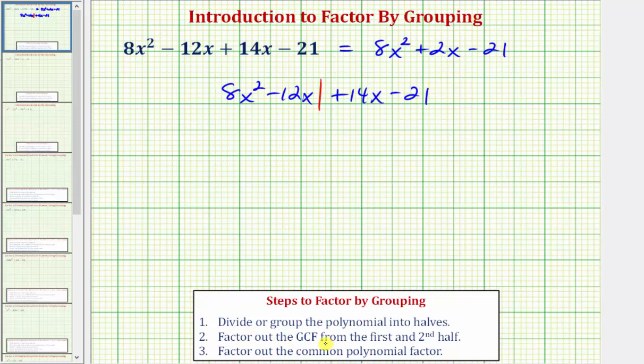Step two, we factor out the greatest common factor from the first and second half. Looking at just the first two terms, the greatest common factor is 4x. If we factor out 4x, we'd be left with the quantity 2x minus 3.